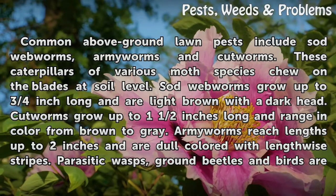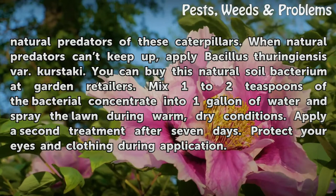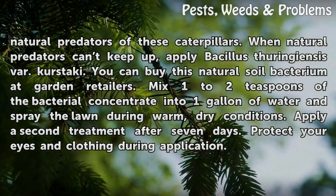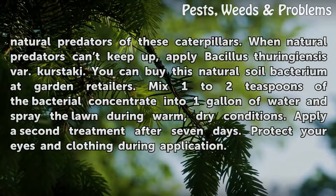Parasitic wasps, ground beetles and birds are natural predators of these caterpillars. When natural predators can't keep up, apply Bacillus thuringiensis. You can buy this natural soil bacterium at garden retailers. Mix one to two teaspoons of the bacterial concentrate into one gallon of water and spray the lawn during warm, dry conditions. Apply a second treatment after seven days. Protect your eyes and clothing during application.